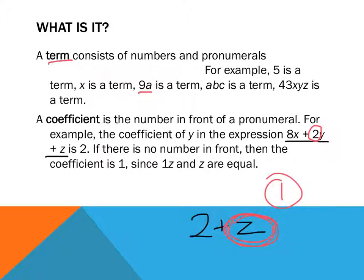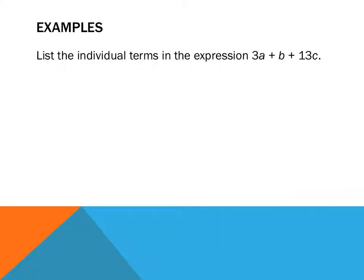I know that was a lot of information to process and I hope that you've written it all down. Now, we're going to put some of that information into practice. The first question asks us to list the individual terms in the expression 3a plus b plus 13c. When I look at this, I can see 3 different terms. How do I distinguish what a term is? Well, different terms in algebraic expressions are separated by operators. My operators are addition, subtraction, multiplication and division. So there are 3 terms in this algebraic expression. Those terms are 3a, b and 13c. Terms are separated in algebraic expressions by operators.